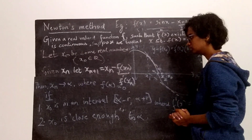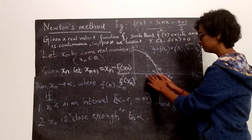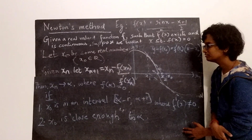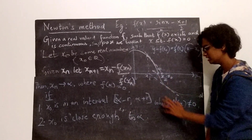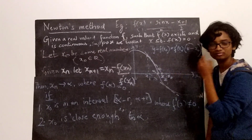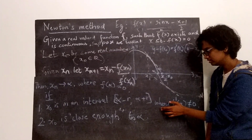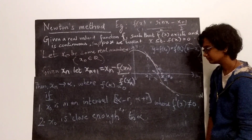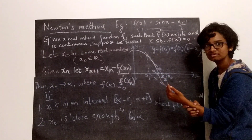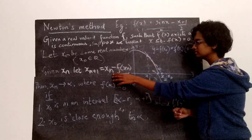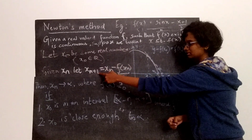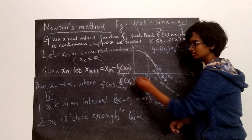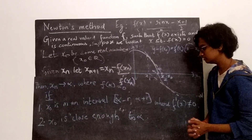What are the conditions? First, you want x0 to be in an interval around the root where the derivative is never equal to 0. The derivative is the slope of the tangent. So this means that in an interval containing x0 and hopefully the root, the tangents can never be horizontal. Because if for some xn the tangent is horizontal, f′(xn) = 0 and xn+1 is undefined.